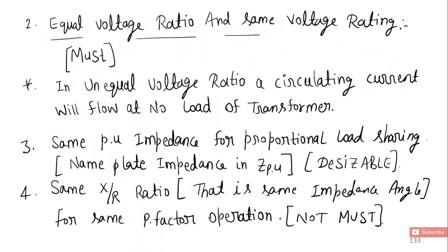Number two: Equal voltage ratio and same voltage rating. This is also must. If the transformer rating is 4000 by 400, for example, both transformers must contain the same voltage ratio.